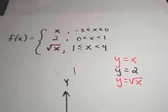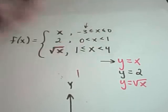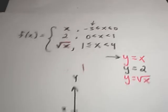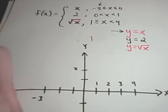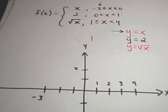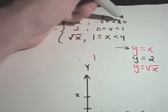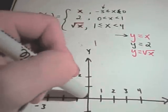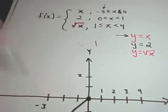For the first piece, y equals x, I look at the interval starting at negative 3. Plugging negative 3 in for x gives y equals negative 3, so the point negative 3 comma negative 3 is on the graph. Since it's less than or equal to, plug 0 in for x and get y equals 0 — solid dot at 0 comma 0. The function y equals x is a 45-degree line.